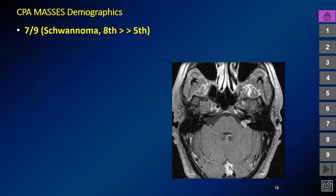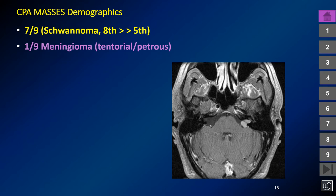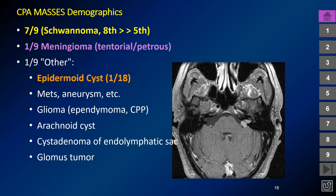The most common CPA mass is a schwannoma, more commonly arising from the eighth nerve than the trigeminal in humans, but in dogs and cats more commonly from the trigeminal nerve. The second most common is meningioma, which should be broad-based against an adjacent dural surface such as the tentorium or petrous dura. The third most common is the 'other' category, topped by the epidermoid inclusion cyst. You can also have mets, aneurysms, gliomas, arachnoid cysts, cyst adenoma of endolymphatic sac origin possibly associated with von Hippel-Lindau disease, and glomus tumors.